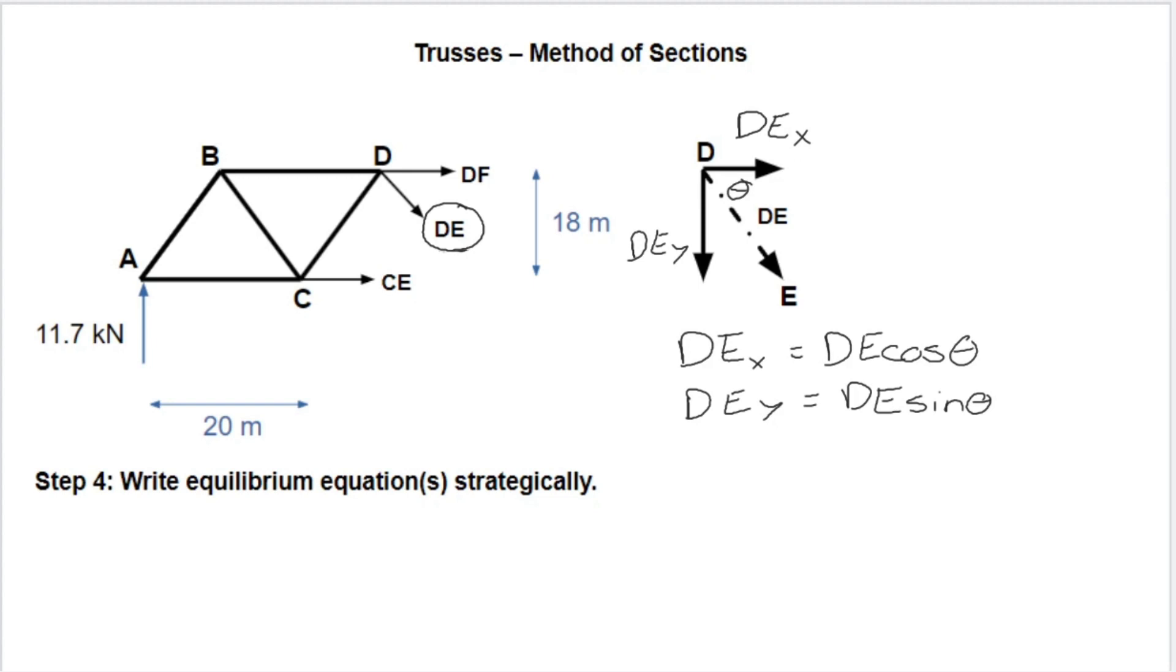If we instead look at some of the forces in the Y, we will be working with our reaction force here at our support. And we'll be working with DEY. And there are no other vertical components here. So we'll have one unknown, DEY, which also happens to be a component of the force that we're trying to solve for. And one known in a single equation. So we can solve that. And there isn't necessarily a single way to solve this. But I think this seems to be the simplest way.